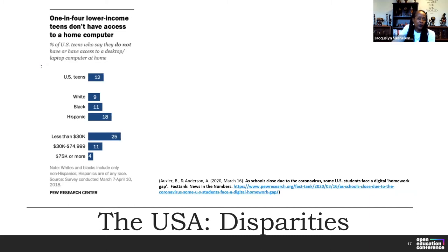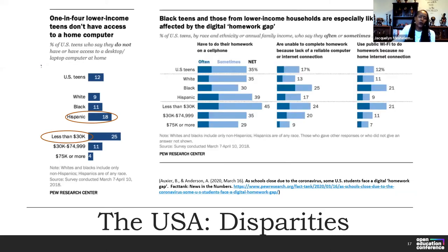Pew Research Center data shows one in four lower-income teens in the United States don't have access to a home computer. Eighteen percent of these individuals are Hispanic, and 25 percent of households earning less than $30,000 lack access. Black teens and those from lower-income households are especially likely to be affected by the digital homework gap — including those who have to do their homework on cell phones.